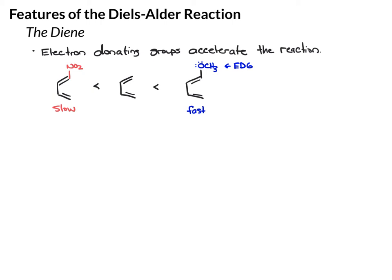It really doesn't matter where that donating group is — you could have it at the top position or another position; it's going to have about the same effect on the rate regardless of where it's positioned. Combining this with what we learned about the dienophile, the best Diels-Alder reaction is going to have a donating group on the diene and a withdrawing group on the dienophile.